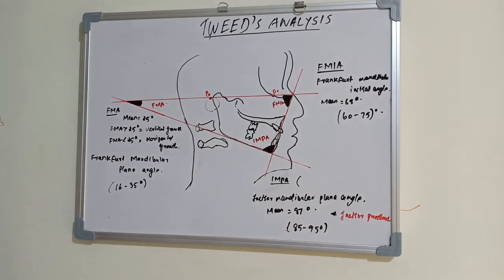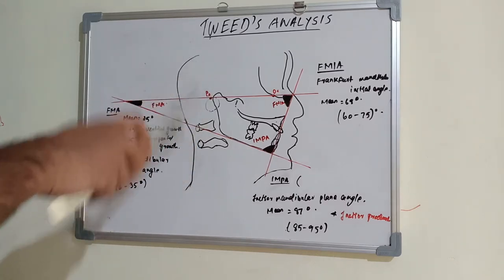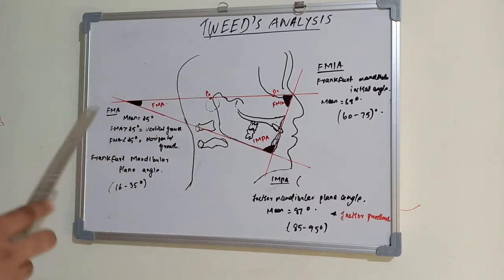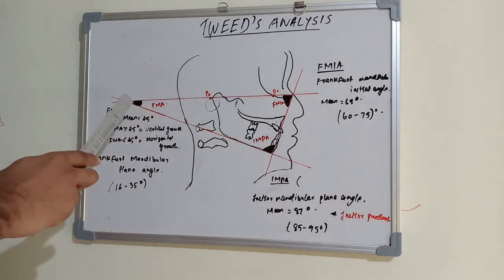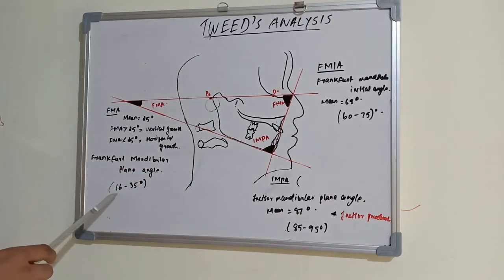Suppose if the value is greater than 25 degrees, it indicates a vertical growth pattern. And if it is less than 25, it indicates horizontal growth pattern. And the range is from 16 to 35 degrees. That is Frankfurt Mandibular Plane Angle.